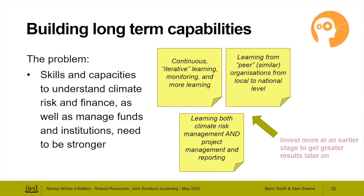Getting fundamentals right in project management and reporting contributes to the building block of trust. Investing more in capabilities at the beginning, before funding flows even start, can get greater results later on. A donor might need to offer greater funds for institutional strengthening and capability building at the beginning of a project, so that when funding flows, those institutions are ready to manage it effectively. The value-add comes later: every year that goes past of funding channeled through a local organization adds greater value to that initial investment.